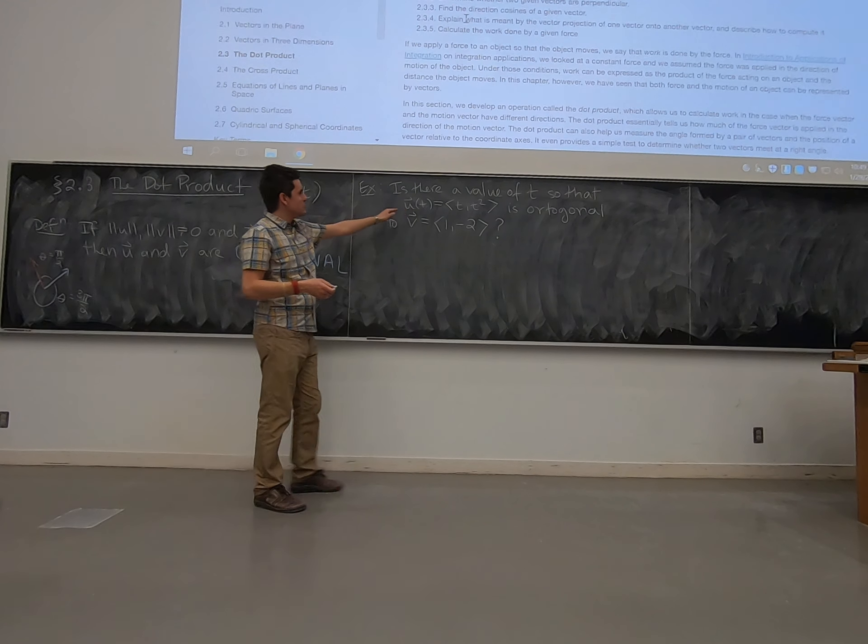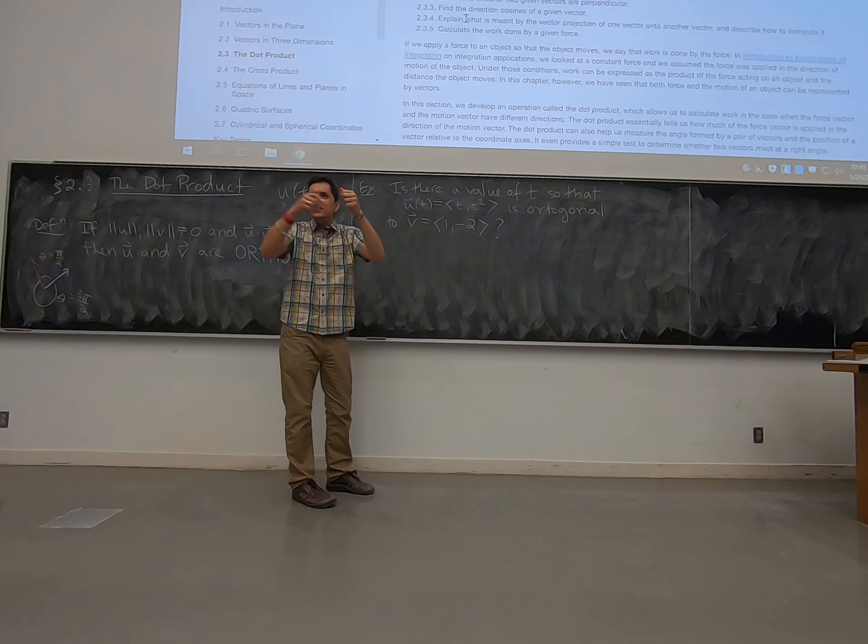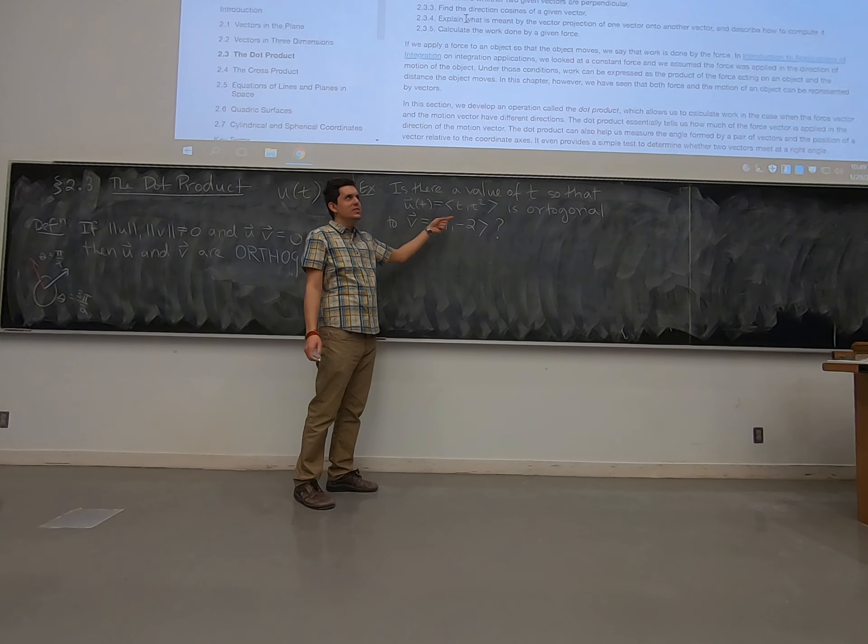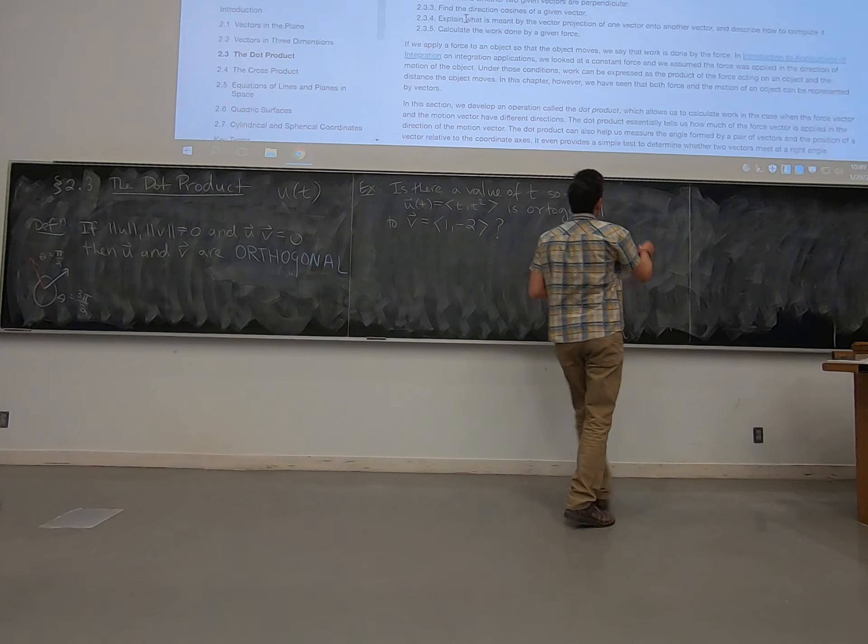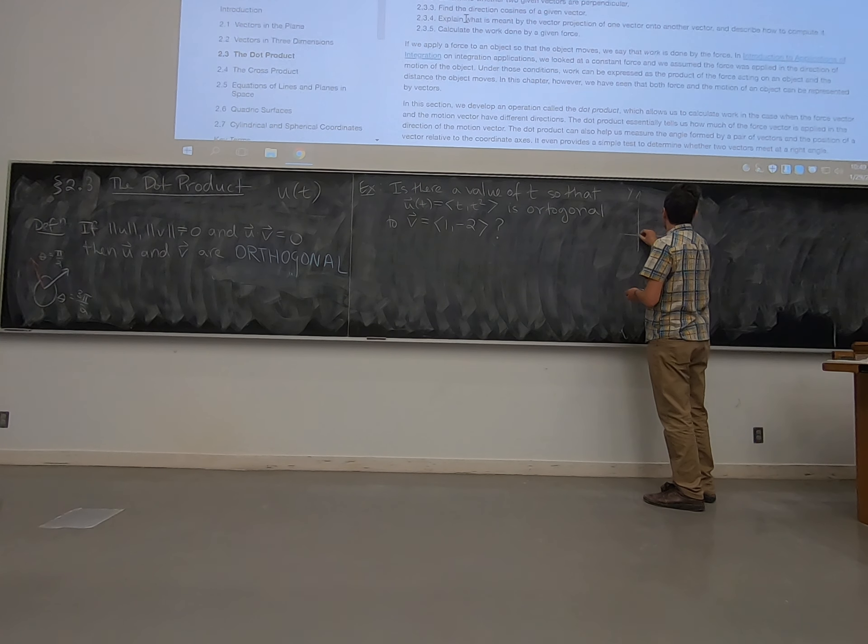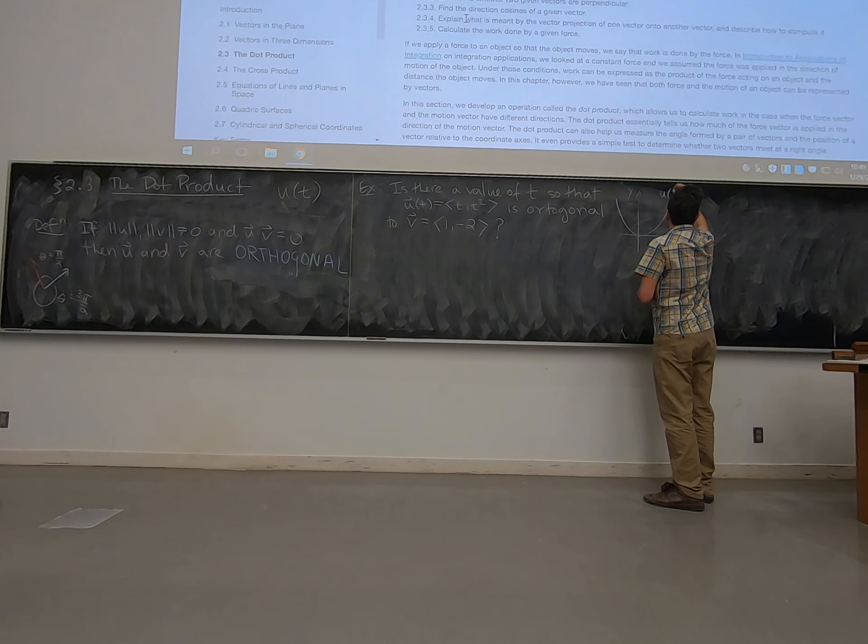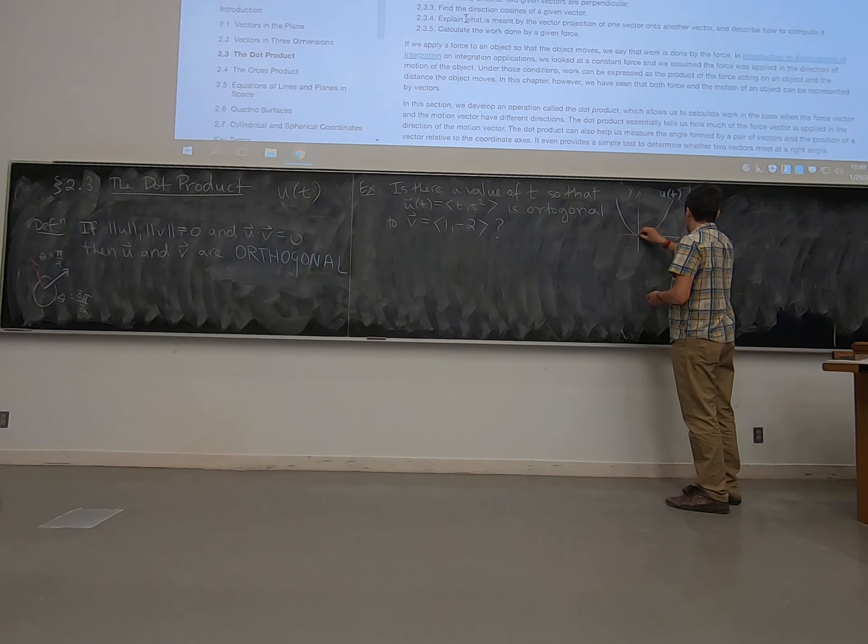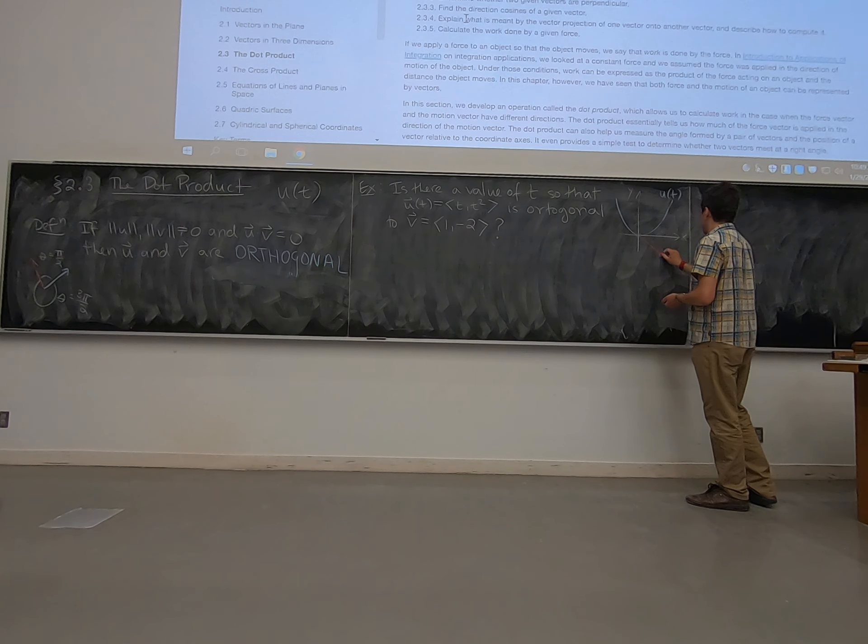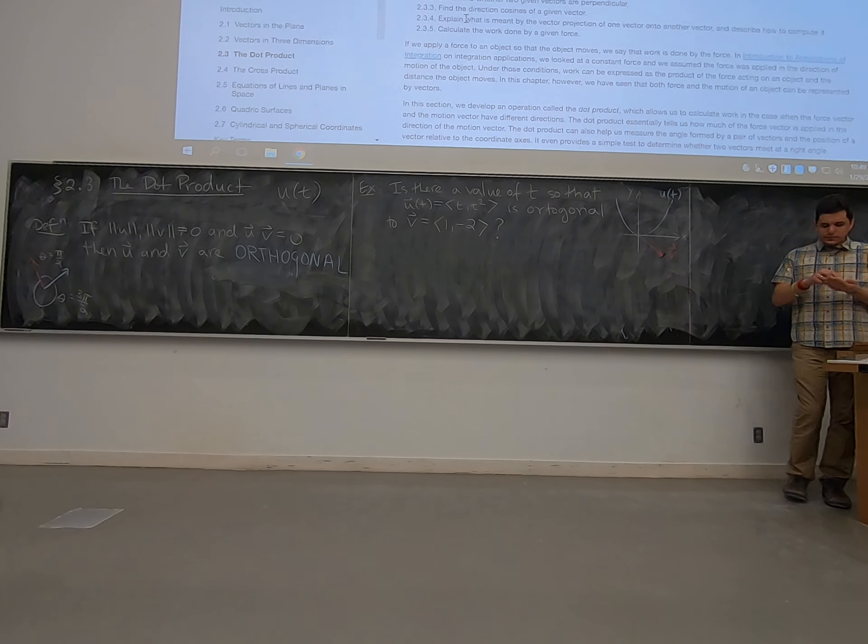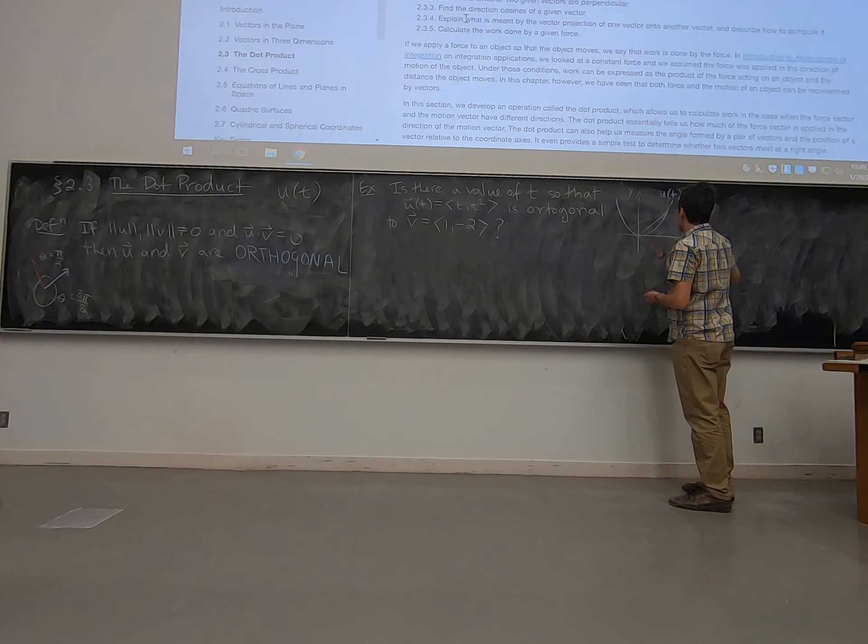Anyway, so we've got this parametric path, right? T, every value of T gives us a different vector. These vectors trace out some kind of path, and we're saying, is this ever orthogonal to this given vector? So we've got this path, and then we've got a fixed vector. And we're asking, is there a point on this path that's perpendicular to this guy? So maybe something like that would do it.